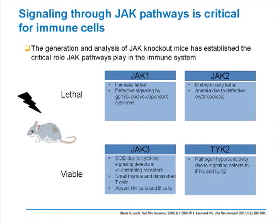Looking at knockouts — if we knock out JAK1 from an animal, it is perinatally lethal, probably due to profound effects on inhibiting cytokines. JAK2 is intimately linked to hemopoietic growth factors, and these animals do not survive — it is embryonically lethal. JAK3 provides our strongest clinical signal: mutations within JAK3 are accountable for 25% to 35% of children with severe combined immunodeficiencies. TYK2 has its own phenotypic appearance, perturbing response to certain pathogens.